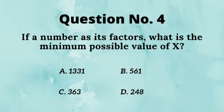Q4. If a number adds 8 factor, what is the minimum possible value of X? Answer is 363.